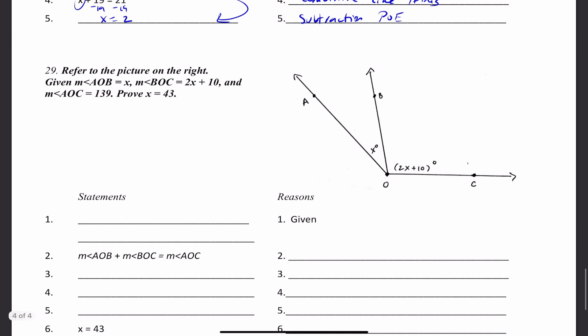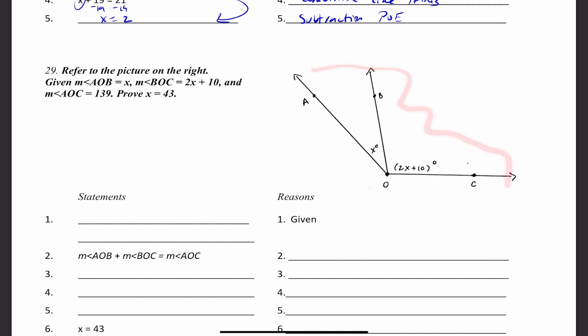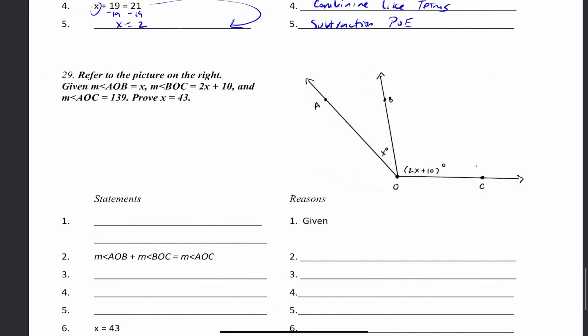Refer to the picture on the right. Given that measure angle AOB is X, and measure angle BOC is 2X plus 10, and the whole thing — measure angle AOC — is 139. Prove that X is equal to 43.